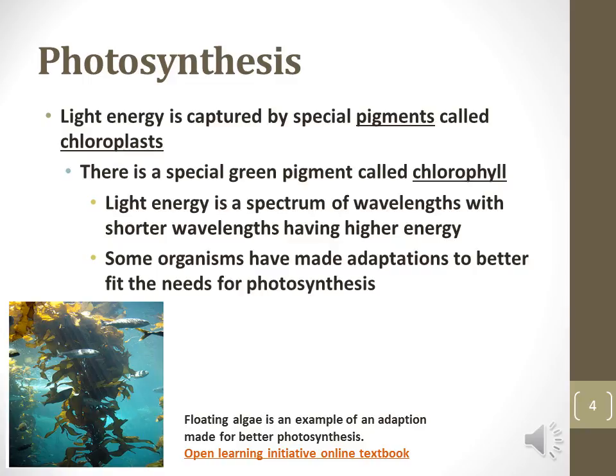Chlorophyll absorbs different colors of light with differences in efficiency because different colored light has different wavelengths. Chlorophyll is not efficient at absorbing light at the wavelengths of green, which is why plants reflect green light and appear green to us.